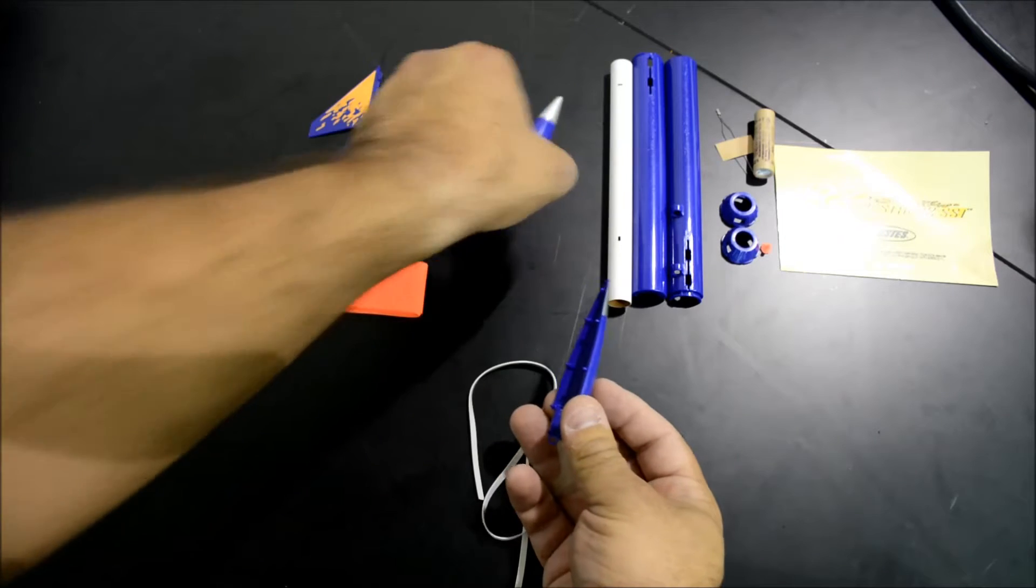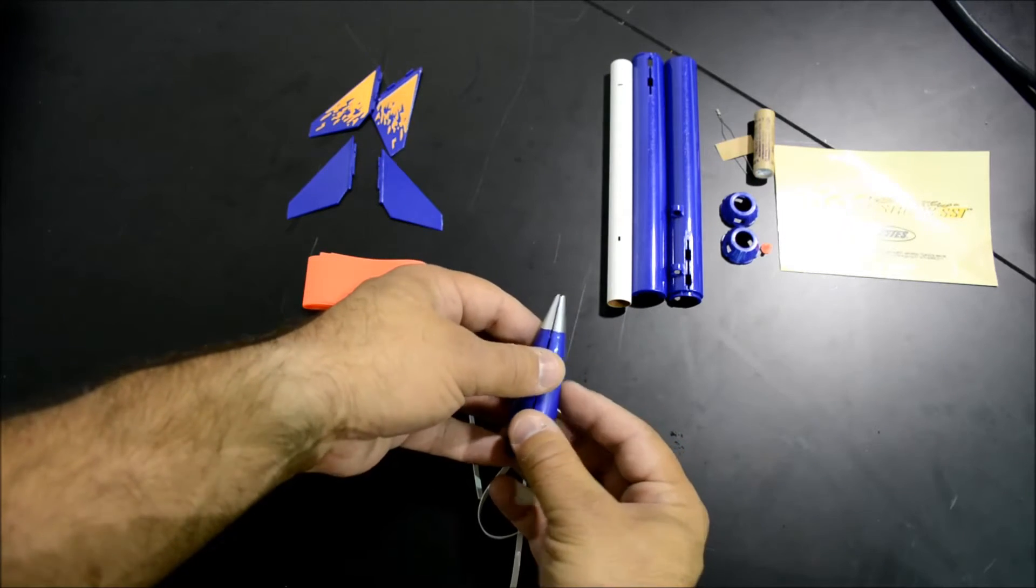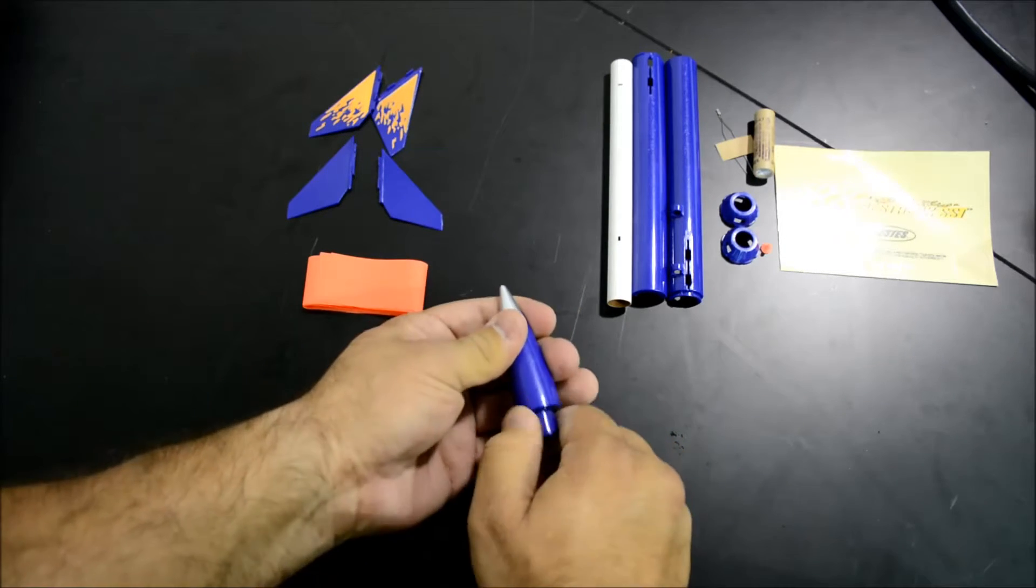We're going to begin by snapping together the nose cone. Simply take the two halves and snap them together.